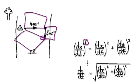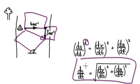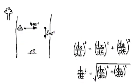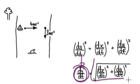From here, we would square root both sides, and that gives us the resultant speed formula.